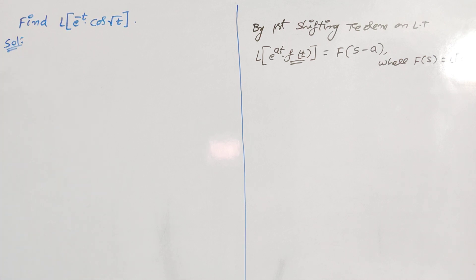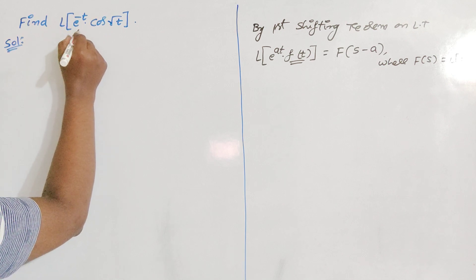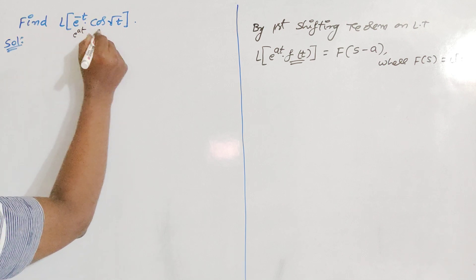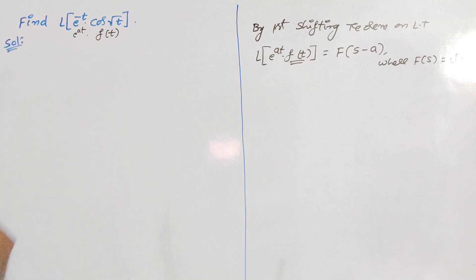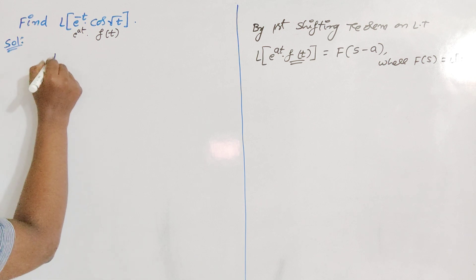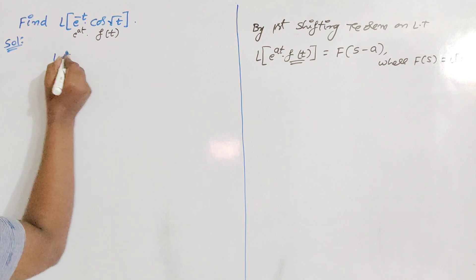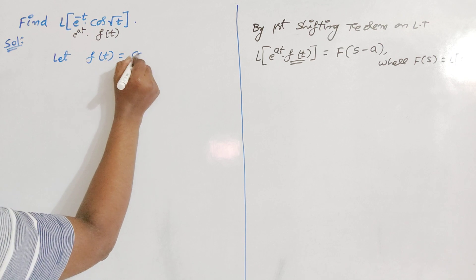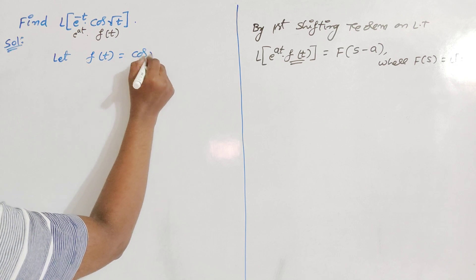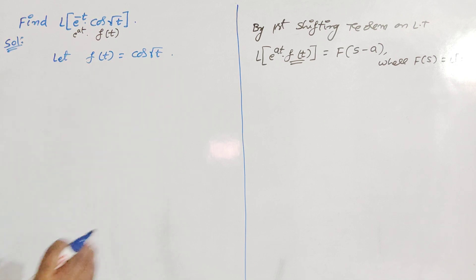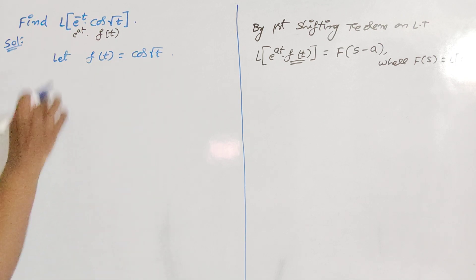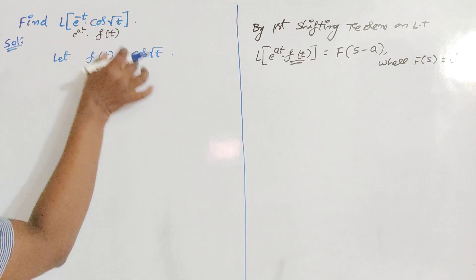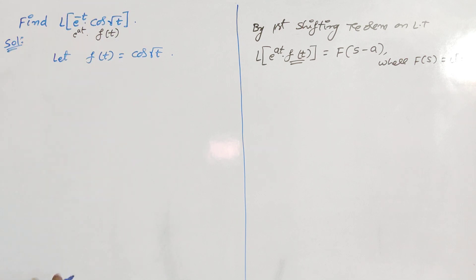First of all, we have to choose what is f(t) in the given problem. Clearly, here we observe that the given problem is in the form of e^(at) into f(t). That is why let us take f(t) as cos√t. The product of the exponential term — the remaining part can be taken as f(t).